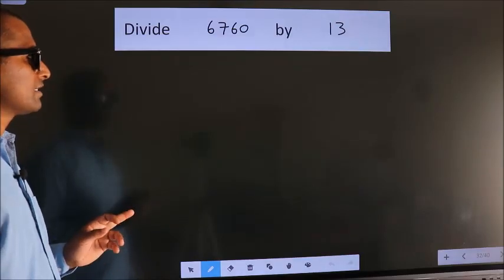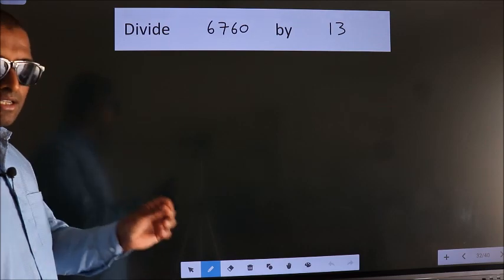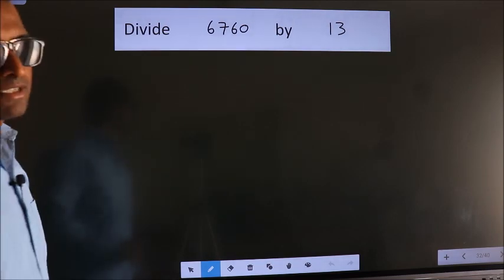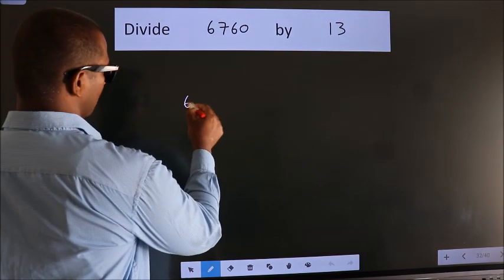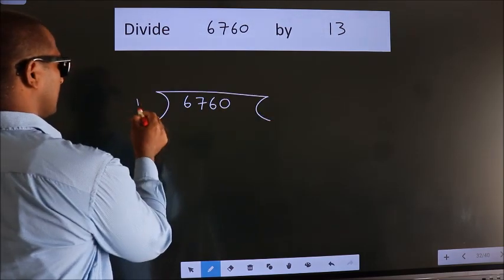Divide 6760 by 13. To do this division, we should frame it in this way. 6760 here, 13 here.